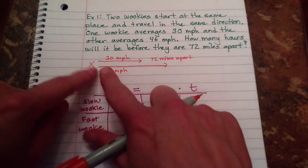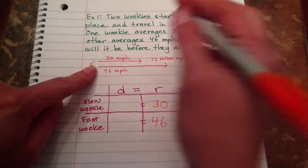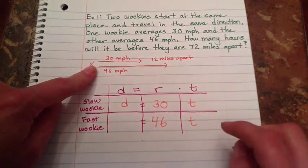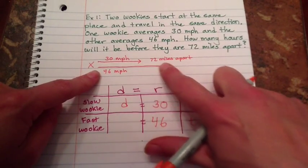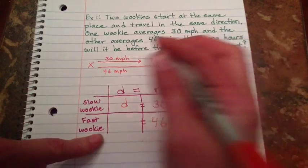So I know that if this one went a certain distance, the slow Wookiee, the fast Wookiee is going to go that same distance plus 72 additional miles.